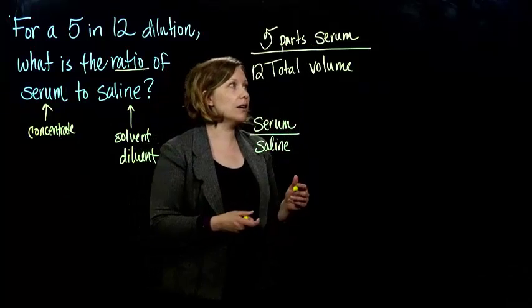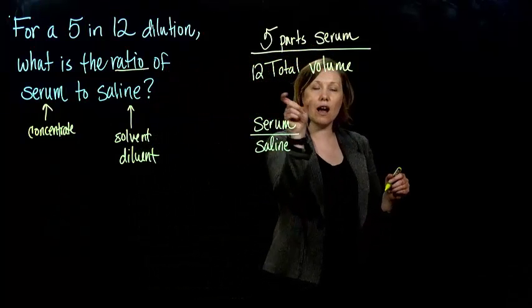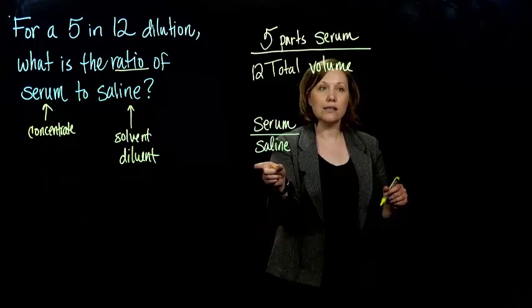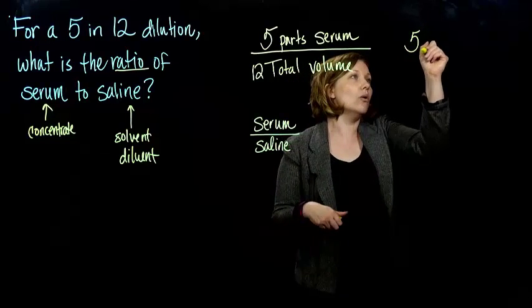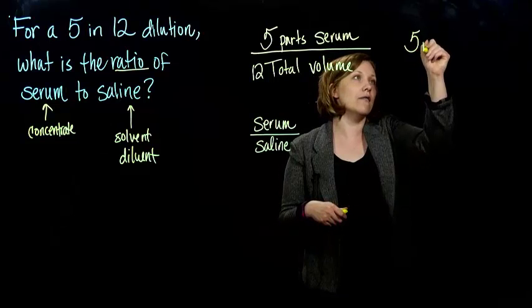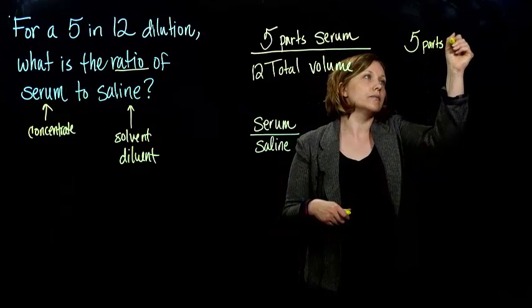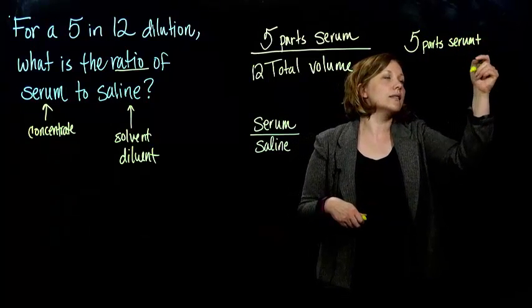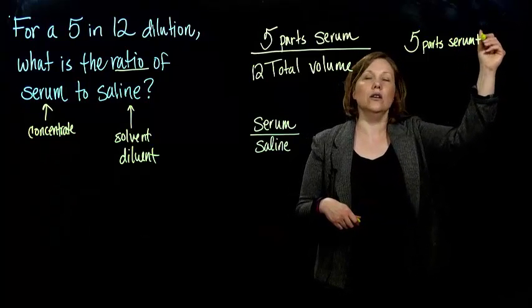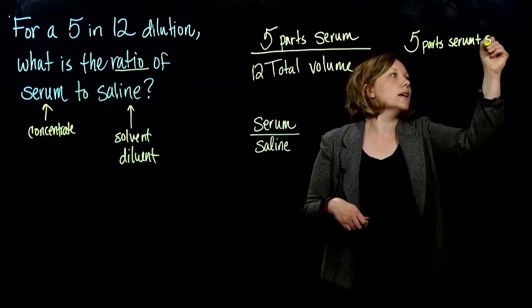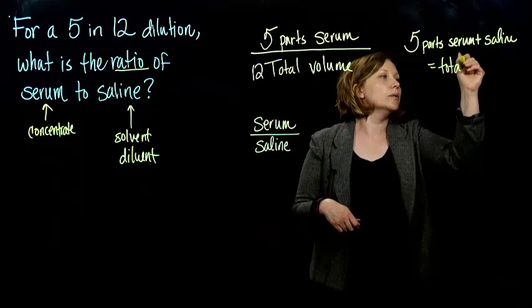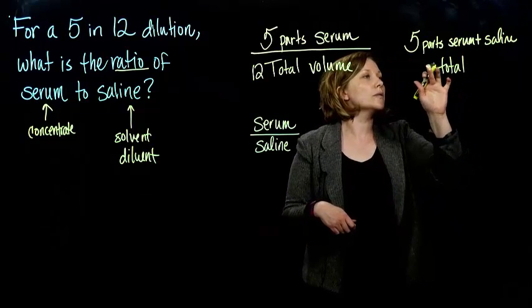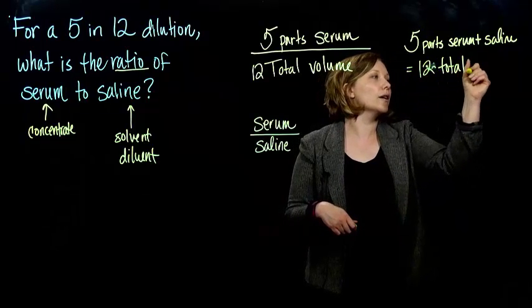So if we have 5 parts serum, can we figure out how many parts saline we will have? So the total volume is going to be the 5 parts serum, plus the saline, will give us the total volume, which they told us was 12 parts total volume.